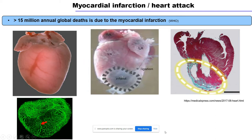Around 15 million people die every year globally because of myocardial infarction or heart attack. Here I am showing a healthy mammalian heart, and on the bottom you can see the blood vessels or coronary vessels distributed throughout the heart. The main reason for heart attack or myocardial infarction is coronary blockage. This red arrow indicates that at this point of coronary blockage, the area getting blood supply through this coronary vessel will not receive blood, along with oxygen and nutrients, resulting in the death of the cardiac muscle tissue.